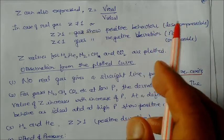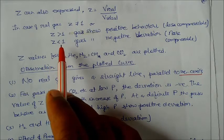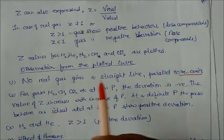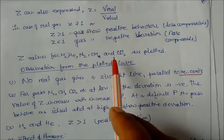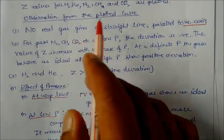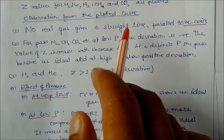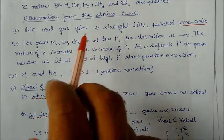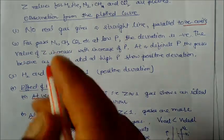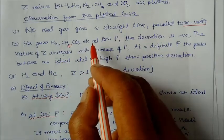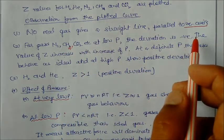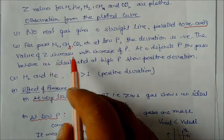When Z is greater than 1, the gas shows positive deviation — it is less compressible, as seen with hydrogen and helium. When Z is less than 1, the gas shows negative deviation — it is more compressible than ideal gases. From the plotted curves, we observe that no real gas gives a straight line perfectly parallel to the x-axis. At low pressure, the deviation was negative, and the value of Z increases with increasing pressure.